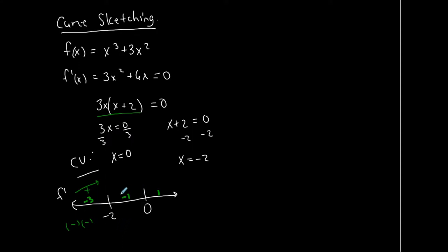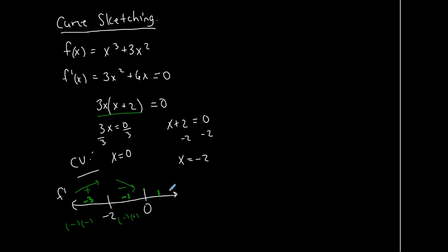Plugging −1 into the factored case: 3×(−1) gives a negative value, and (−1 + 2) gives a positive number. Multiplying a negative times a positive gives a negative outcome. All numbers in this interval give negative first derivatives, which means the function is decreasing along that interval.